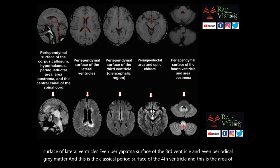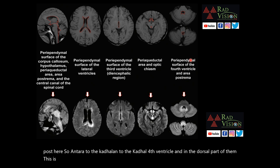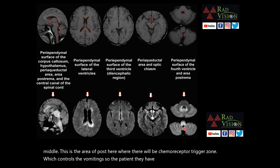The area postrema is located anterior to the caudal fourth ventricle, in the dorsal part of the medulla. This is the chemoreceptor trigger zone which controls vomiting, so the patient may present with severe vomiting.